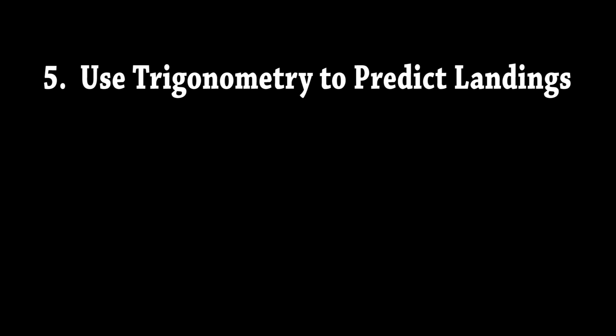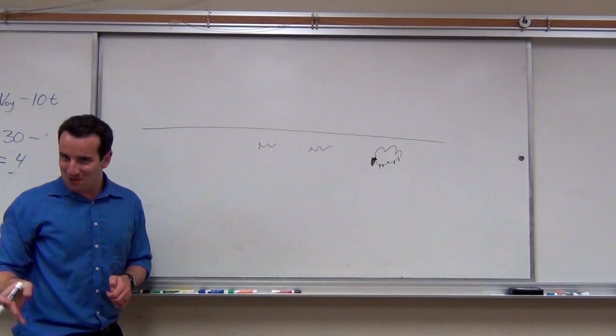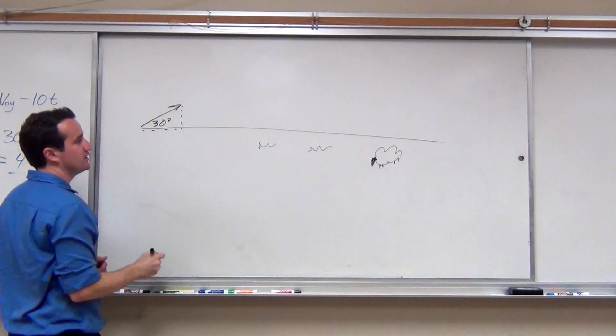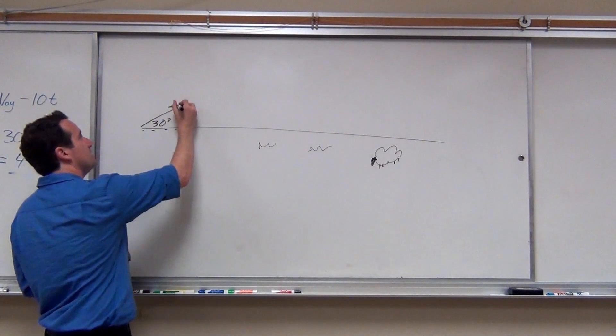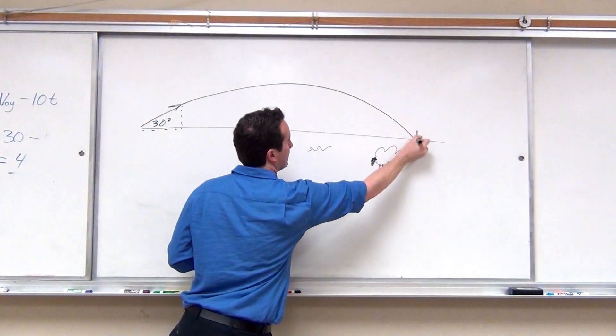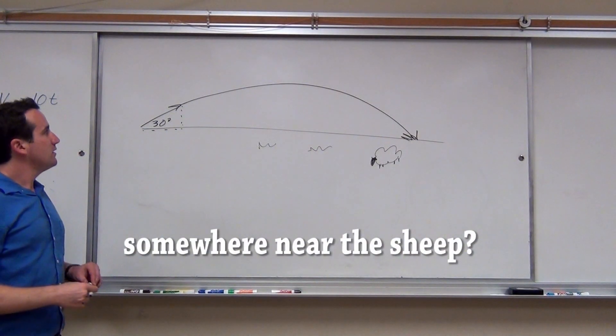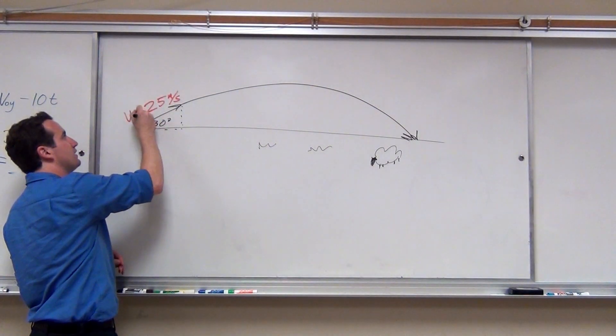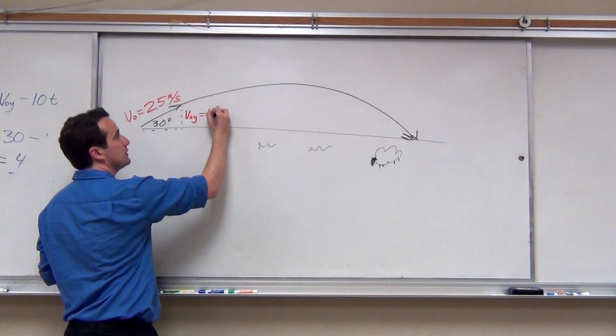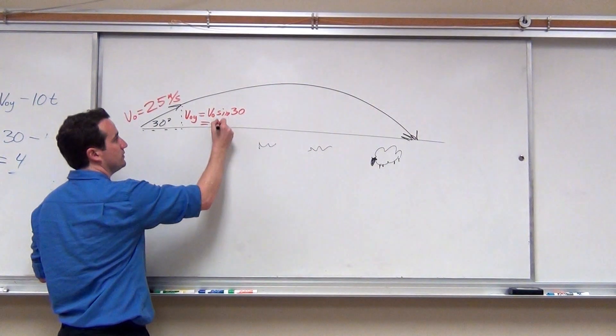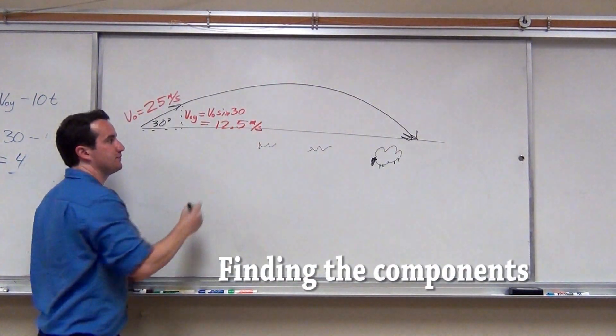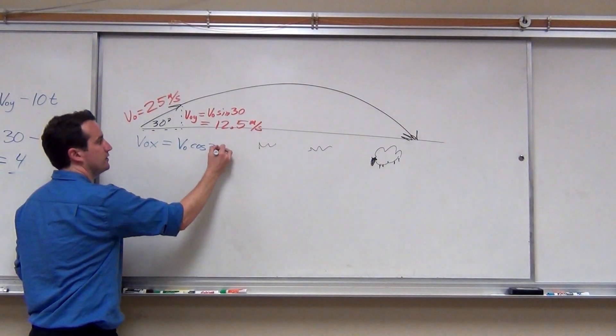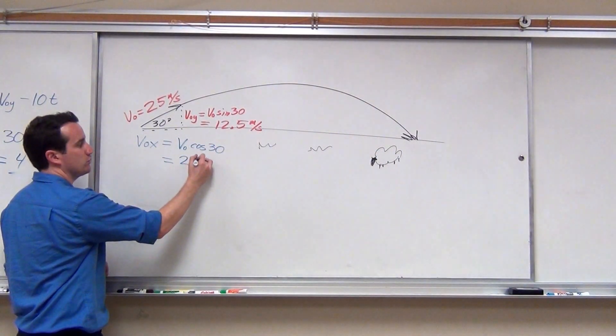It's time for a real calculation. We'll launch the air-powered projectile at 30 degrees into a parabolic arc. It should hit the ground in a predictable spot. But where? The initial velocity is 25. VOY is V0 sine of 30, which is 12.5 meters per second. Similarly, VOX is V0 cos of 30, which is 21.6.